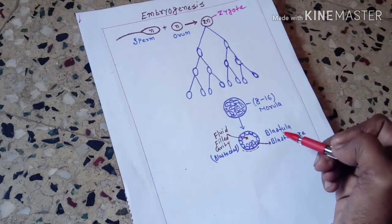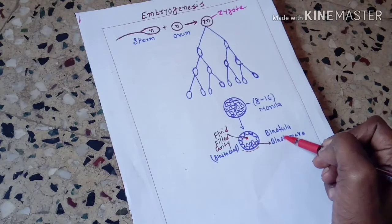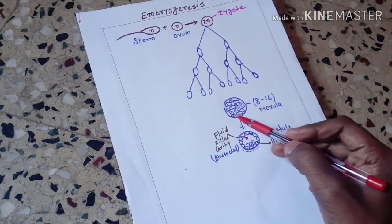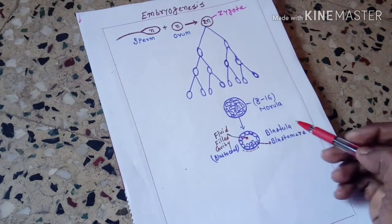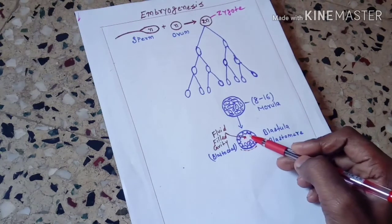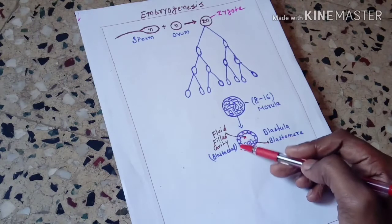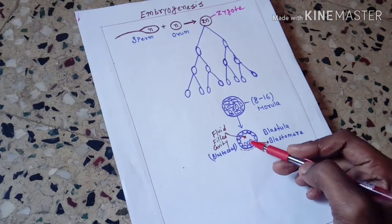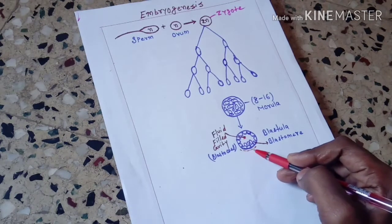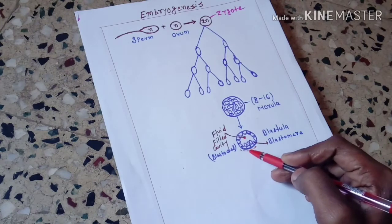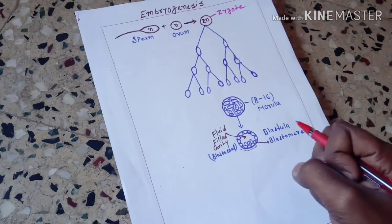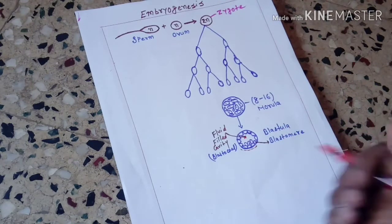Now look at the difference between morula and blastula. In morula, cells are totally compactly arranged with no cavity — it is tightly packed. But in blastula, also called blastocyst, there is a hollow fluid-filled cavity called the blastocoeel. The outer layer of the blastula is called the blastoderm. This is the basic difference between morula and blastula.